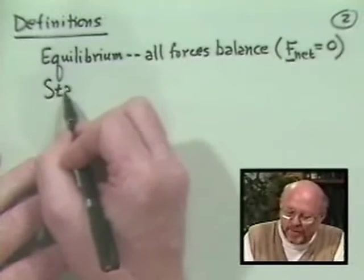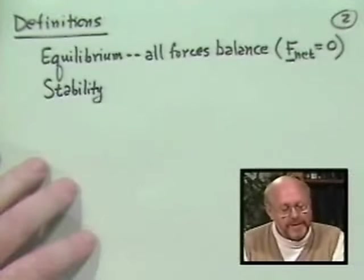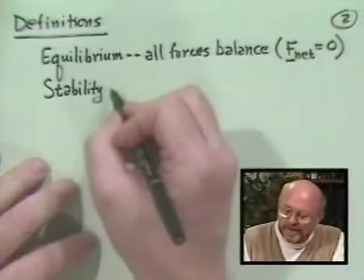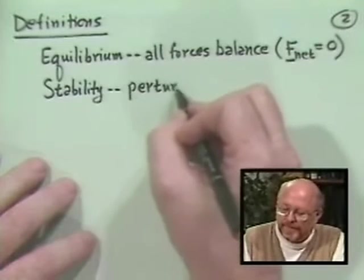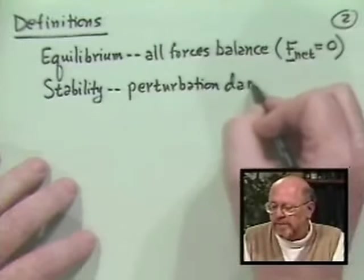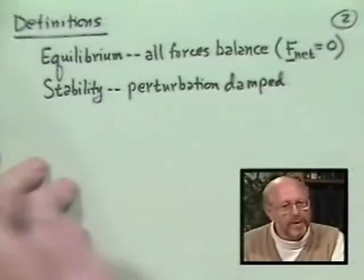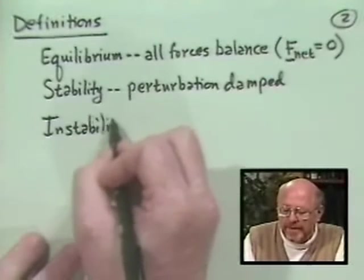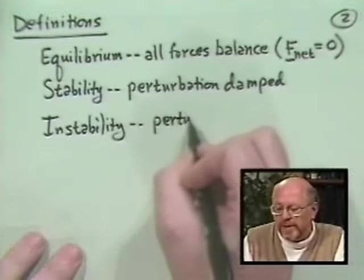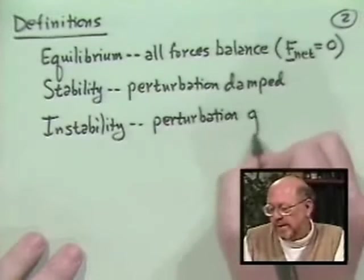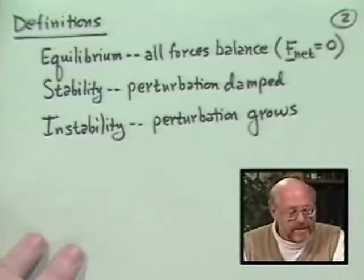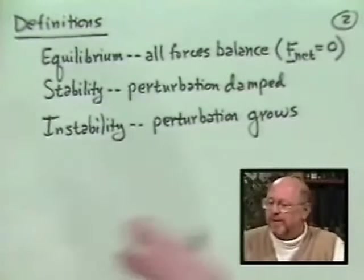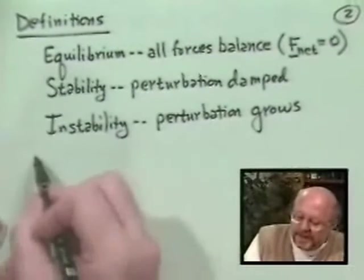What we mean by equilibrium is that all of the forces balance — the net force on the plasma at any place is in fact zero. What we mean by stability is that if I make a perturbation to the system and kick it a little bit, that perturbation will be damped. It'll jiggle, but it'll oscillate around zero and gradually damp away. Instability is of course the opposite: a perturbation grows.